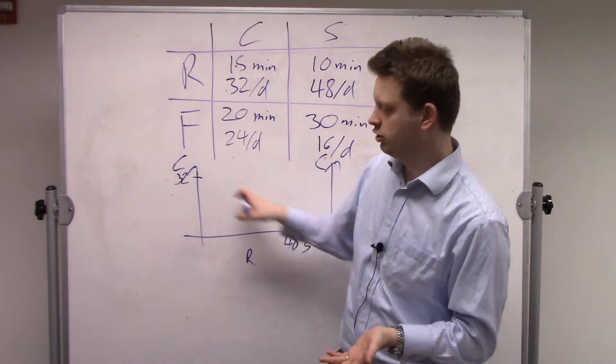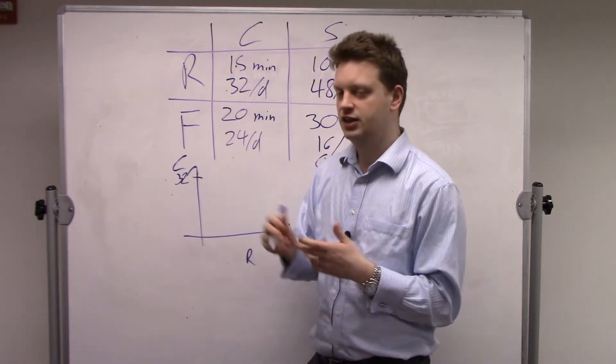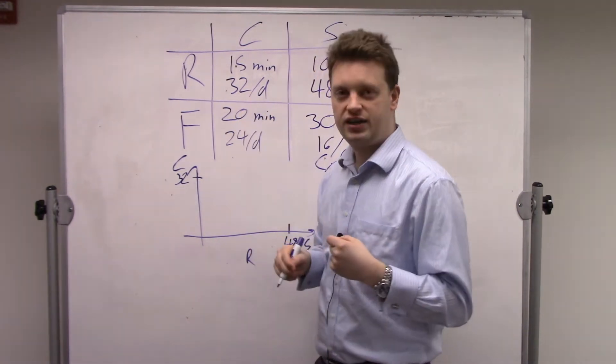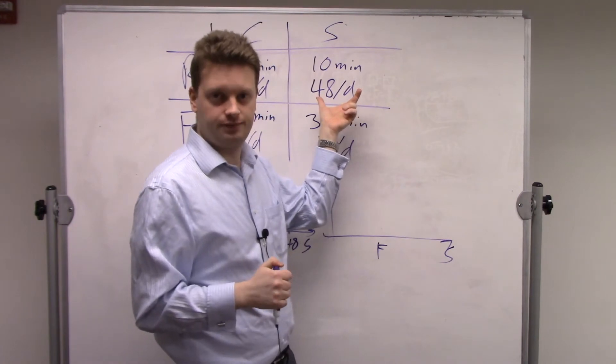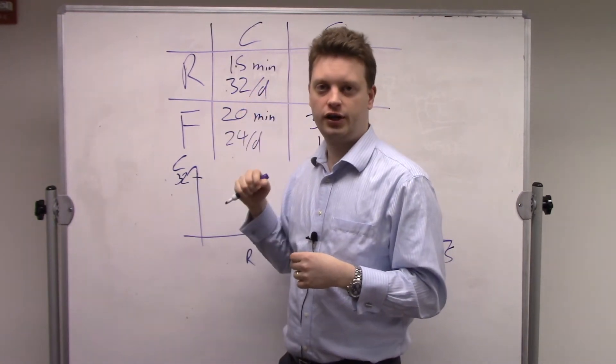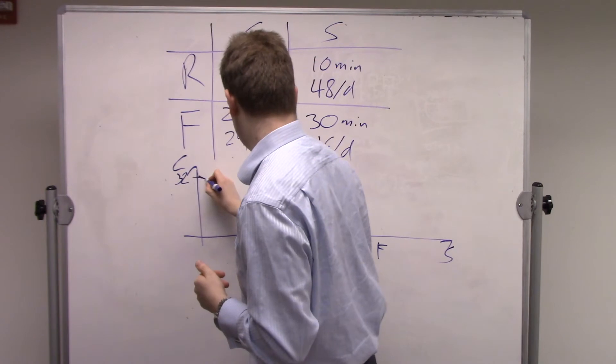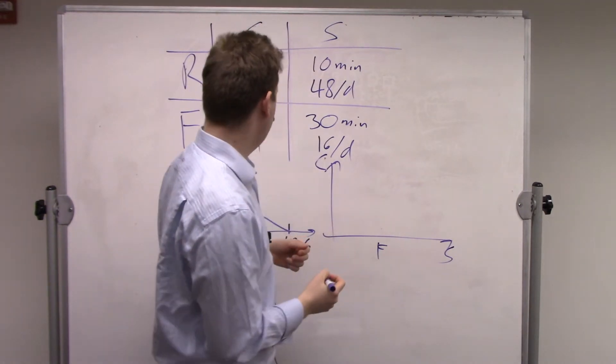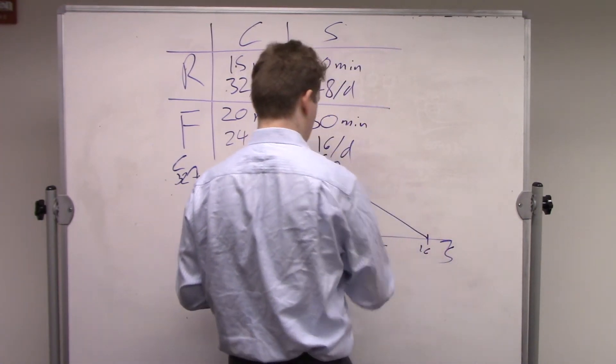Now the question is, how do we get all the points in between? Let's assume he spends all day gathering coconut, then he has 32. Let's assume he spends one hour less gathering coconut, that means he gets four less, only 28 coconuts. At the same time, he gets six salmon. If he does that for another hour, he will lose another four coconut and gain another six salmon. So it's a linear relationship, and we can just draw a straight line between those two.